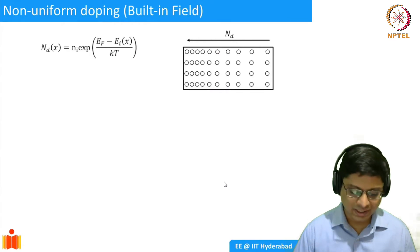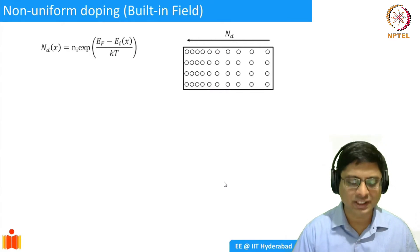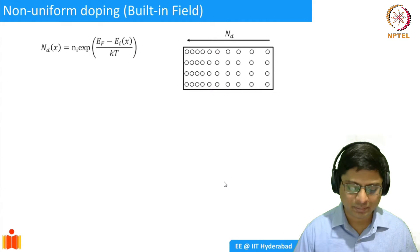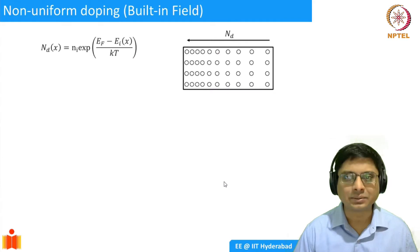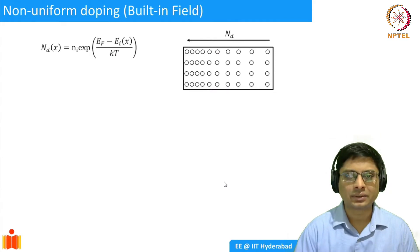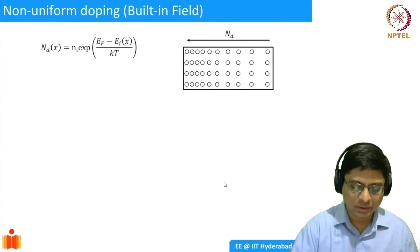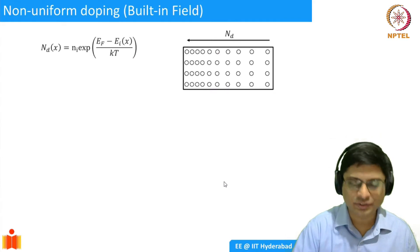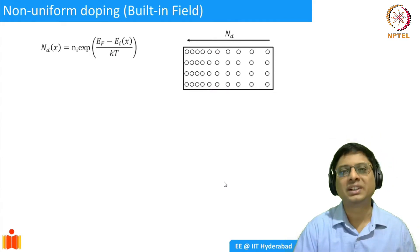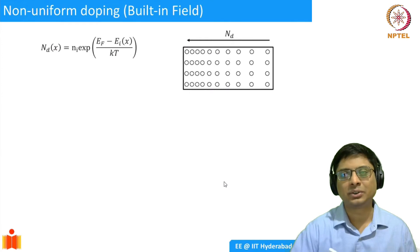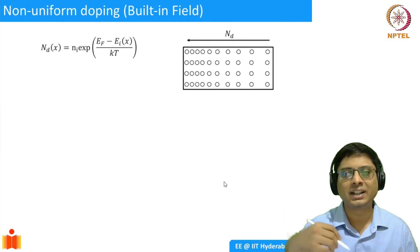So N_D is basically N_i times exponential of (E_F minus E_I) divided by kT. I deliberately wrote E_I as a function of X because you will see in the end that there is going to be a gradient in the bands, which corresponds to an electric field.